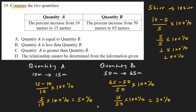Now let's summarize the results. Quantity A, which is the percent increase from 10 meters to 15 meters, is 50 percent. Quantity B, the percent increase from 50 meters to 65 meters, is 30 percent. Comparing them: 50 percent is greater than 30 percent, which means quantity A is greater than quantity B. Therefore, the answer is A.